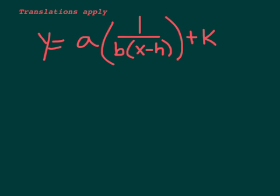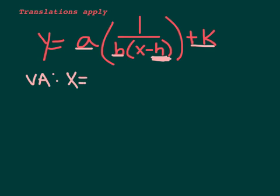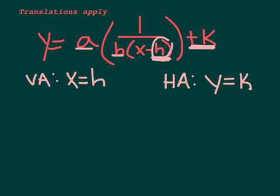The translations we've been learning about all year apply to these too. If I took my basic 1 over x, I could stick an a out in front — that's your vertical stretch or shrink. I could put a b in the bottom with the x part — that's your horizontal stretch or shrink. The minus h will shift it left or right, and the plus k will shift it up or down. So when you're graphing a rational function in this format, the vertical asymptote shifts to x equals h, and the horizontal asymptote shifts to y equals k.